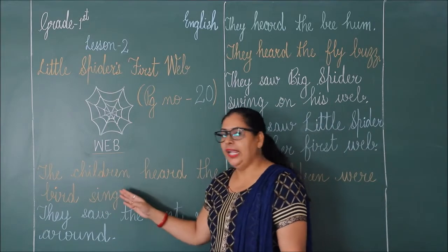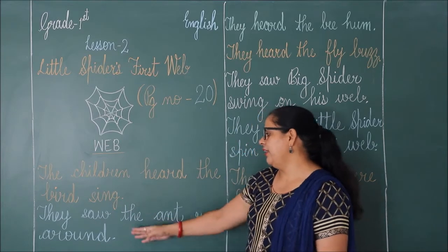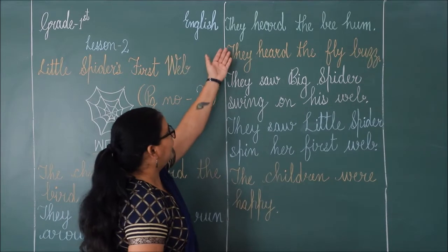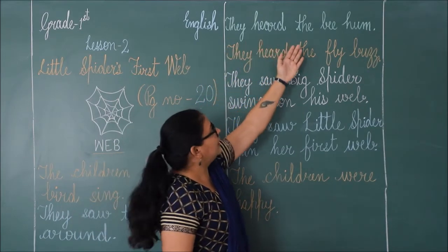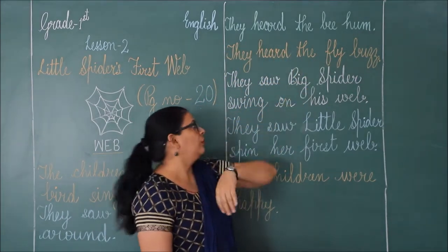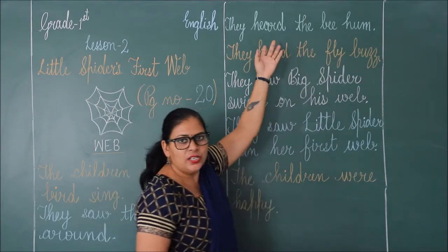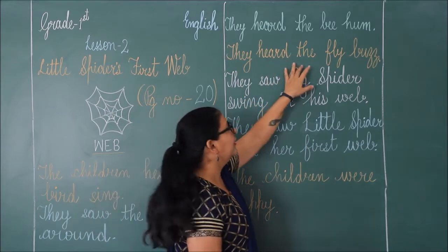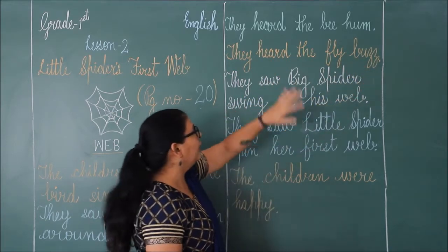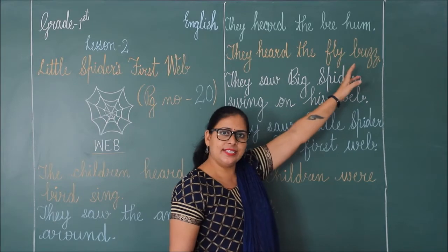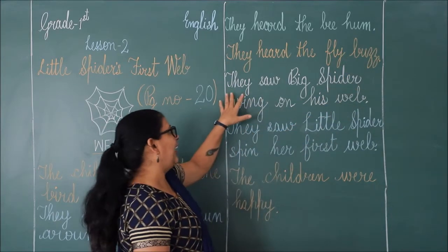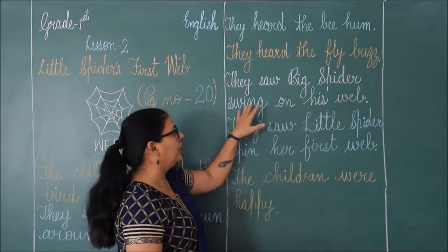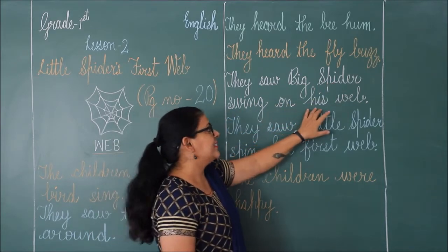So here, the children heard the bird singing and saw the ant running around. They heard the bee hum — unhone bee ko hum karte huye suna. They heard the fly buzz — unhone fly ko buzz karte huye suna.